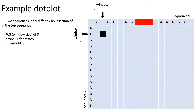When deciding whether to draw a dot at the row and column indicated by the arrows, you ask: is ATG similar to ATG? Once you've defined your windows, you compute how similar those two short sequences are. In this example, we give a score of +1 if bases match and -1 if they don't. Since ATG and ATG are identical, their score is three. You also define a threshold: if the score is at least the threshold, draw a dot. With a threshold of three, these windows pass — a perfect match with score three — so a dot is placed at that row and column.